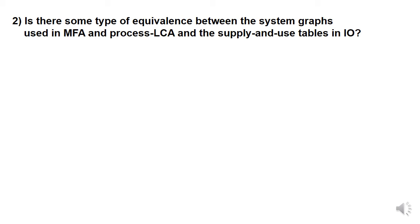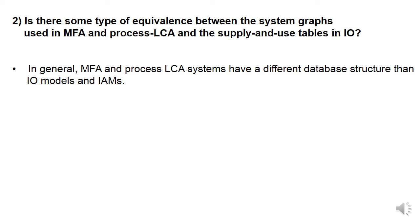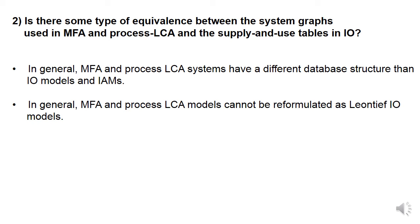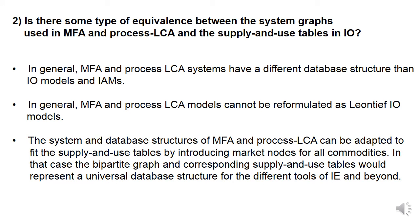For research question two — whether there is equivalence between system graphs in MFA and process LCA and supply and use tables — in general there is no such equivalence. The system structure of MFA and process LCA differs from input-output models and IAMs. This means an MFA model in general cannot be reformulated as a Leontief input-output model. However, we can introduce markets to MFA and process LCA systems and reroute industry-to-industry flows via markets for the respective commodities. By doing so, we create a bipartite graph structure for these models as well, meaning the corresponding supply and use tables would represent a universal database structure for the different tools of industrial ecology and beyond.